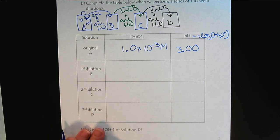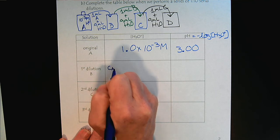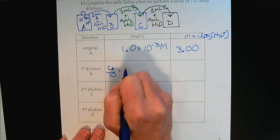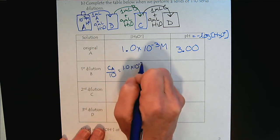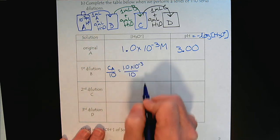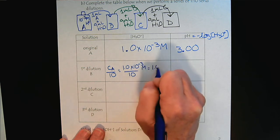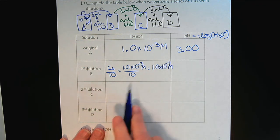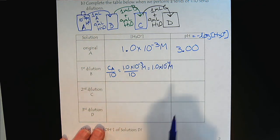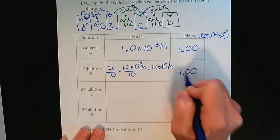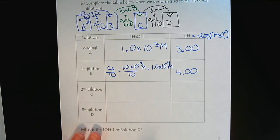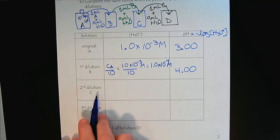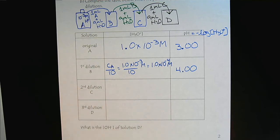So now for the first dilution, the concentration of A divided by 10. So that would be 1.0 times 10 to the minus 3 divided by 10 molar. So that would be 1.0 times 10 to the minus 4 is the result. You should be able to do this in your head, but if you need to use a calculator, try to transition away, because in your bio classes they won't let you use a calculator.